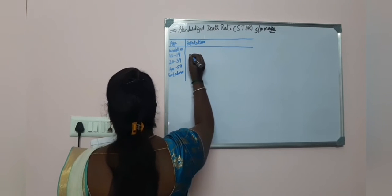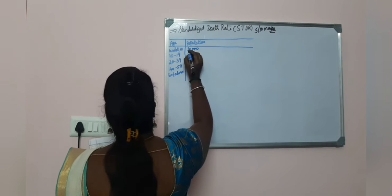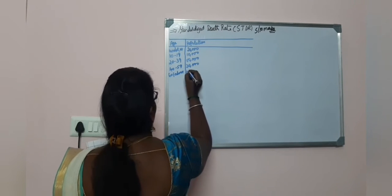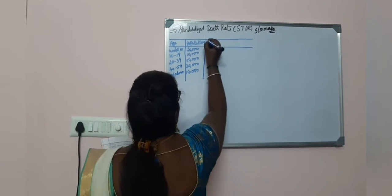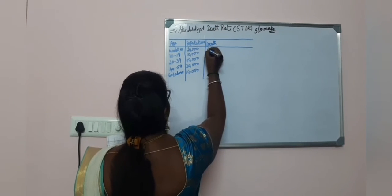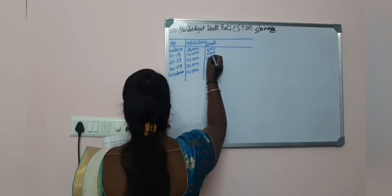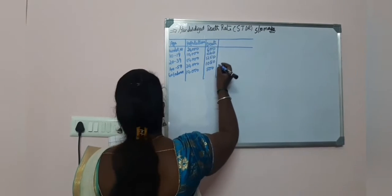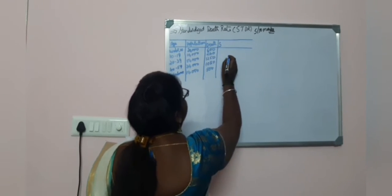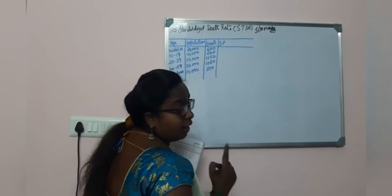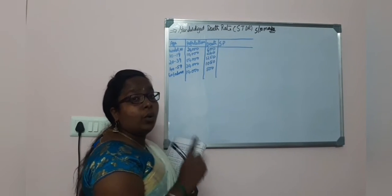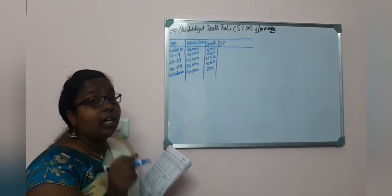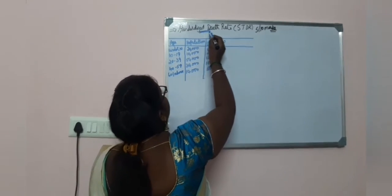Death values are 600, 240, 120, 250, and 500. For this standardized death rate problem, they will give standard population. When standard population is given in the question, or when comparison of two datasets such as town A and town B, or village 1 and village 2 is given, then additional information means it is a standardized death rate problem.